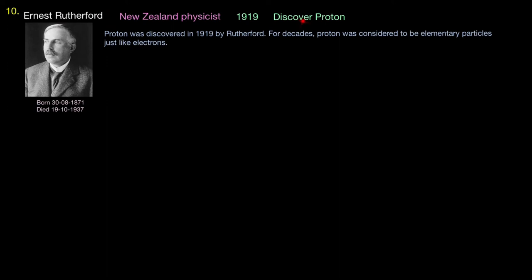After that, Ernest Rutherford then discovered proton. Proton was discovered in 1919 by Rutherford. For decades, proton was considered to be elementary particle just like electron. But after that, it was discovered that proton wasn't an elementary particle but rather proton is a composite particle because it consists of quarks.